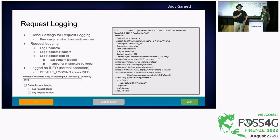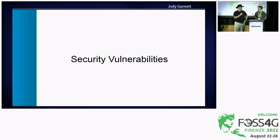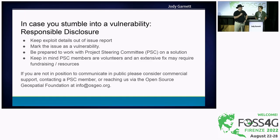We also added a feature that was previously buried in configuring your web.xml file by hand — there's now a UI to enable request logging. You can actually check what GeoServer sees for requests: request headers, request bodies, and so on. If you run into a security vulnerability, there's a contact email address as part of our security policy.